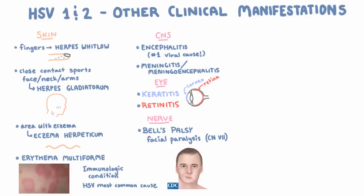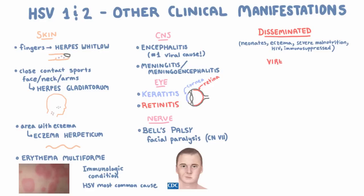We don't exactly know how it causes Bell's palsy, so we're not going to go into that. Herpes can also cause more disseminated disease. It's uncommon, but it can happen in neonates, people with eczema, severely malnourished children, and patients with decreased cell-mediated immunity, like in advanced HIV or people on immunosuppression regimens. In these cases, you can actually get viremia and then spread to visceral organs like the liver and the adrenals, and also the brain in neonates.